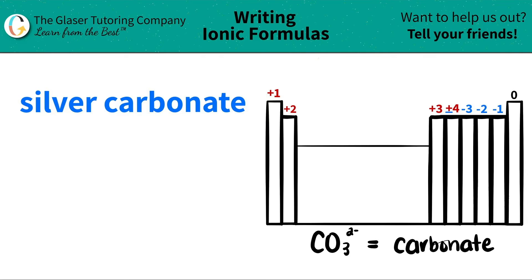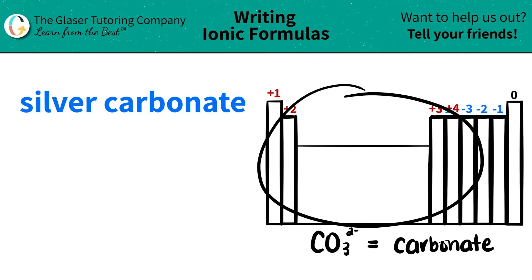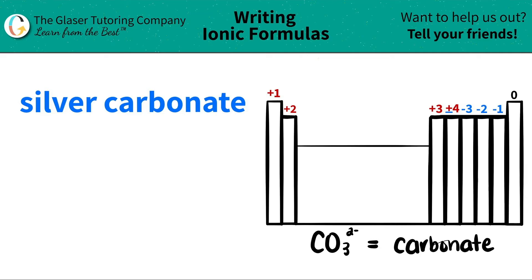Today we are going to be writing the formula for the ionic compound silver carbonate. So let's work from left to right. I'm first going to look for silver. I scan the periodic table to see where silver is, and silver is right around here on the periodic table. It's represented by Ag. So that's the element — silver is Ag.